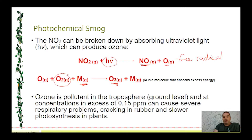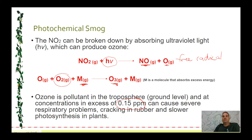Up in the stratosphere, the second layer of the atmosphere, ozone is really important because it blocks harmful UV radiation from reaching earth. In the troposphere at ground level, however, it's actually a pollutant and quite dangerous to humans. At concentrations in excess of 0.15 parts per million, it causes respiratory problems — people have trouble breathing. It also cracks rubber, which is dangerous for rubber gaskets in car engines, and it slows down photosynthesis in plants, causing issues with oxygen replenishment and CO₂ reduction.